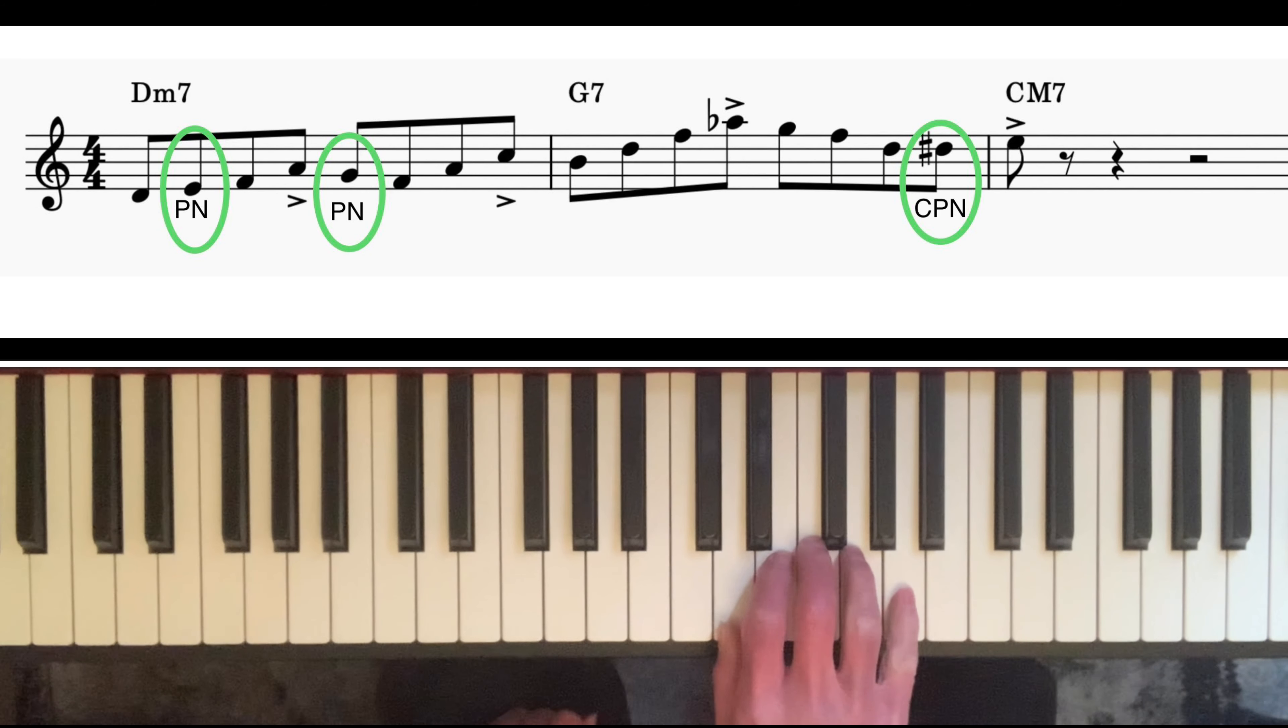On the first four quavers, I'm outlining the root, the third, and the fifth of the D minor seven, and I've got one passing note E in between the root and third. On the second four quavers...